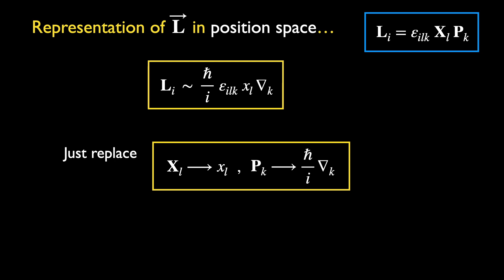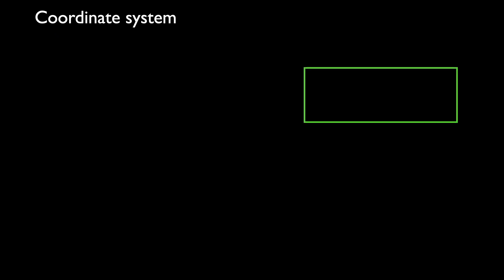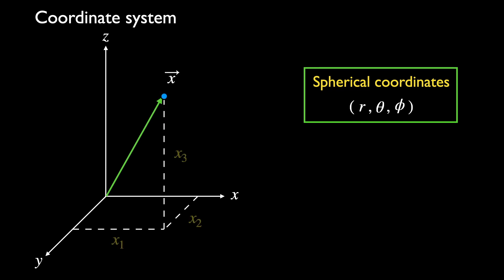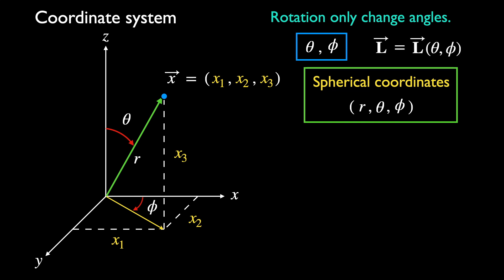Speaking of position space, let's choose a coordinate system that will be useful for a system with rotational symmetry. We are of course talking about spherical coordinates. In this coordinate system, the rotation of a point about any axis which goes through the origin is just purely a change in angular variables, theta and phi. This immediately implies that the generator of rotations, L, must also depend only on angular variables.